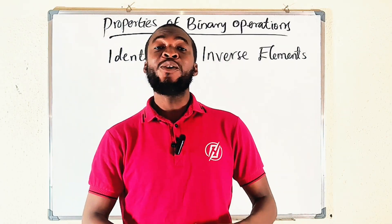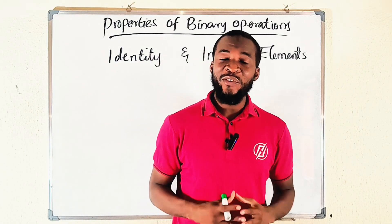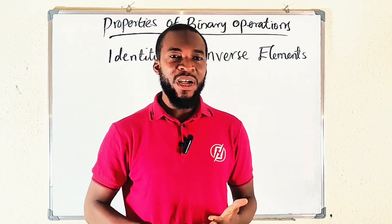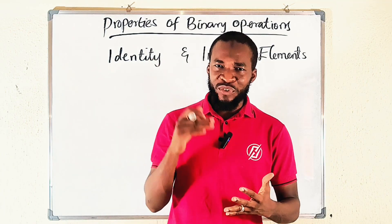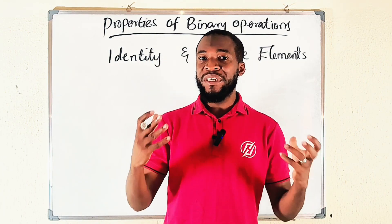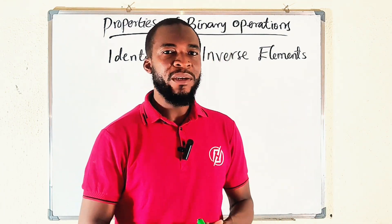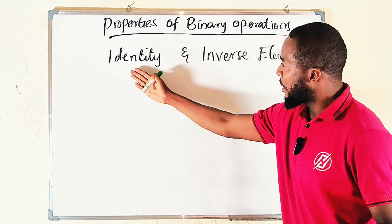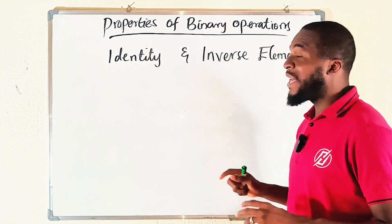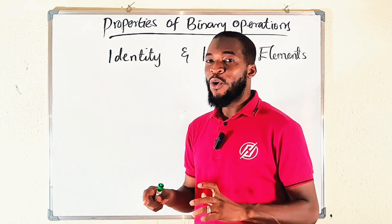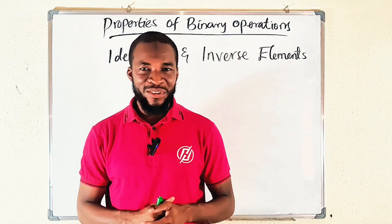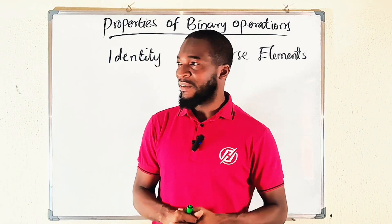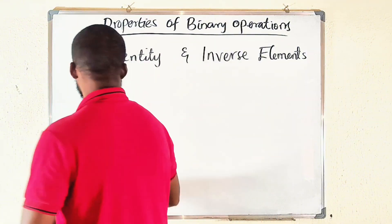Hello everyone. Still on the properties of binary operations — so far we have discussed the closure, the associativity, and the commutative properties. In this tutorial I would like to talk about the identity and inverse elements of binary operations. Don't forget to like, comment, and subscribe. Let's get started.